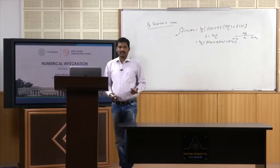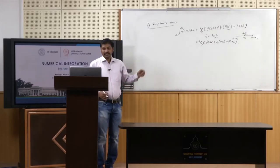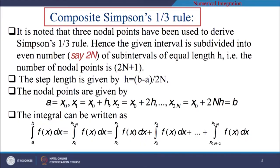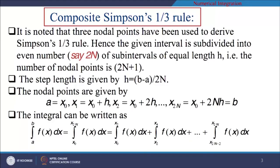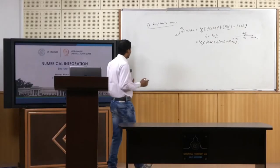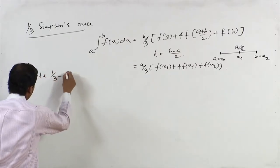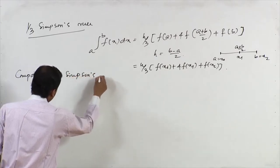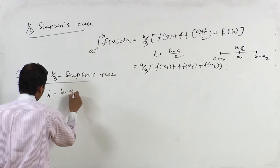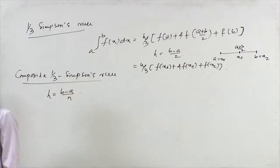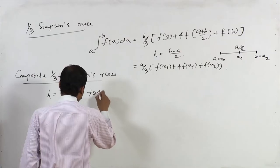For the composite formula of Simpson's 1/3 rule, since we are considering only two sub-intervals at a time, the total interval should be divided into 2n+1 nodal points. For the composite Simpson's 1/3 rule, we divide the total interval [b minus a] by 2n sub-intervals, so the step size h equals (b minus a) / 2n.